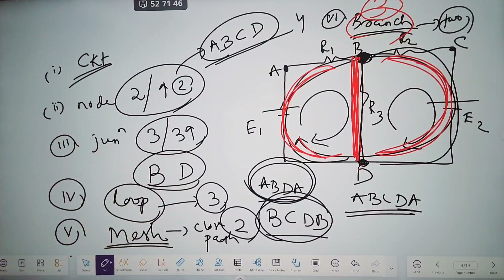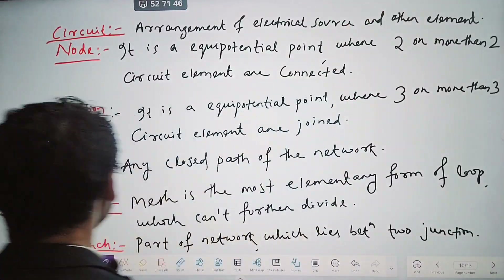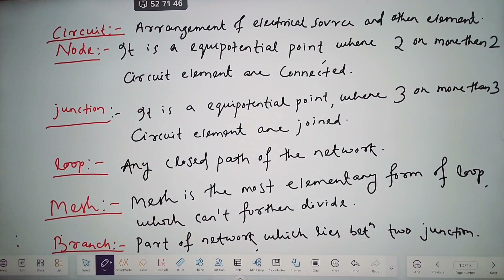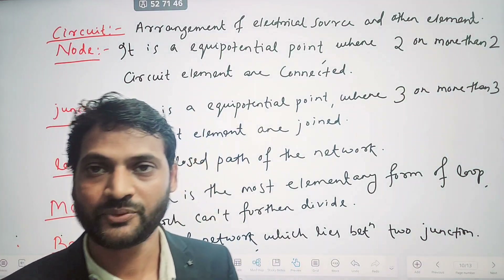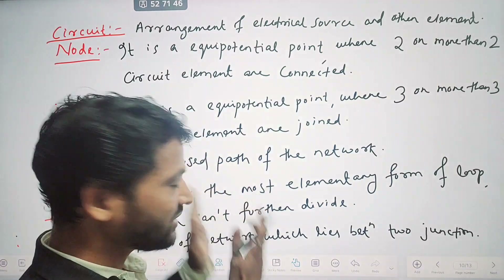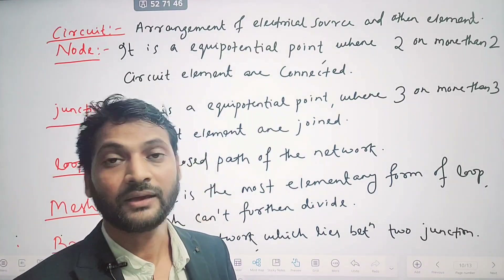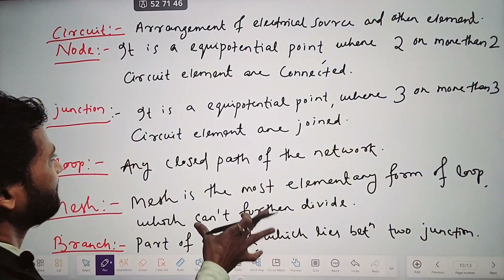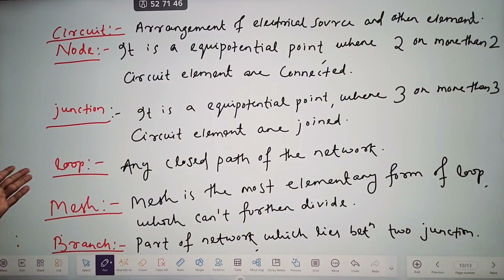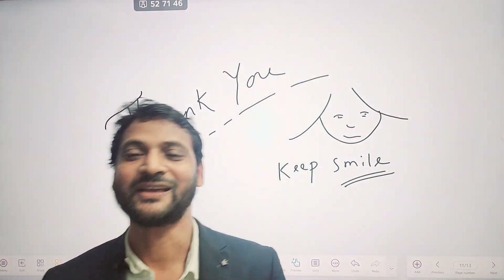That is all about the introduction part of DC circuit, or basic terminology. I have written notes covering circuit, node, junction, loop, mesh, and branch — it will help you in the exam. My sincere advice is to first understand the concept, and then note it down. If you understand the concept, you can easily write it in your own language. Hope you guys understood — thank you so much for watching.